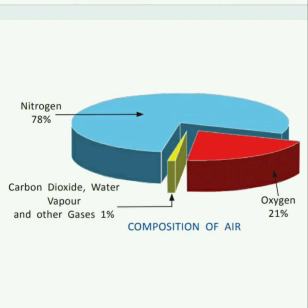Here you can see it shows the composition of air. Nitrogen is 78%, oxygen is 21%, and other gases like carbon dioxide and water vapors make up 1%.